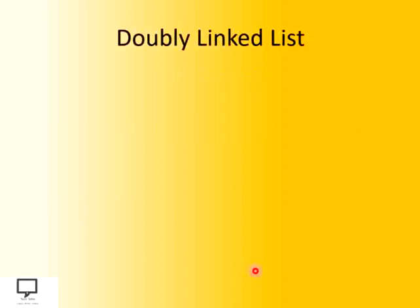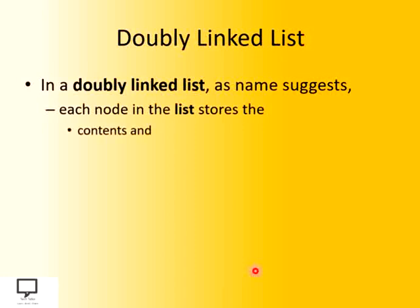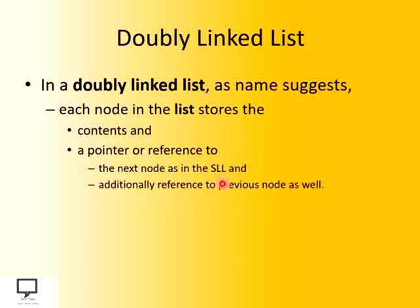Before going to the create operation directly, we will see some details about doubly linked list. The doubly linked list name is given according to its behavior. Every node is having three fields mainly. The first one is content, also called the data or information part. The other two are pointers or references to both directions — the first one is to the next node, just same as the singly linked list, and another pointer is to the previous node. This is the additional reference part available with the doubly linked list, and that's why the name is given doubly — because the nodes of this linked list are having pointers in both directions.